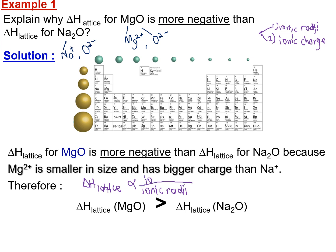Mg²⁺ has a higher charge of 2+ compared to Na⁺ which is 1+. Additionally, Mg²⁺ has a smaller size than Na⁺ according to the periodic table. Therefore, since Mg²⁺ is smaller in size and has a bigger charge than Na⁺, both factors contribute to why the enthalpy lattice of MgO is greater than the enthalpy lattice of Na₂O.